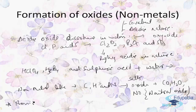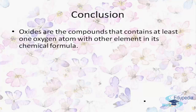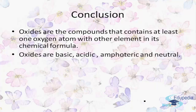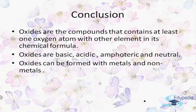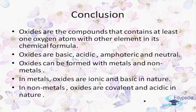We conclude that non-metals basically form acidic oxides. Overall, oxides are compounds that have at least one oxygen atom with one other element in their chemical formula. We have basic, acidic, amphoteric, and neutral oxides formed with metals and non-metals. In metals, oxides are ionic and basic in nature; in contrast, in non-metals, oxides are covalent and acidic in nature.